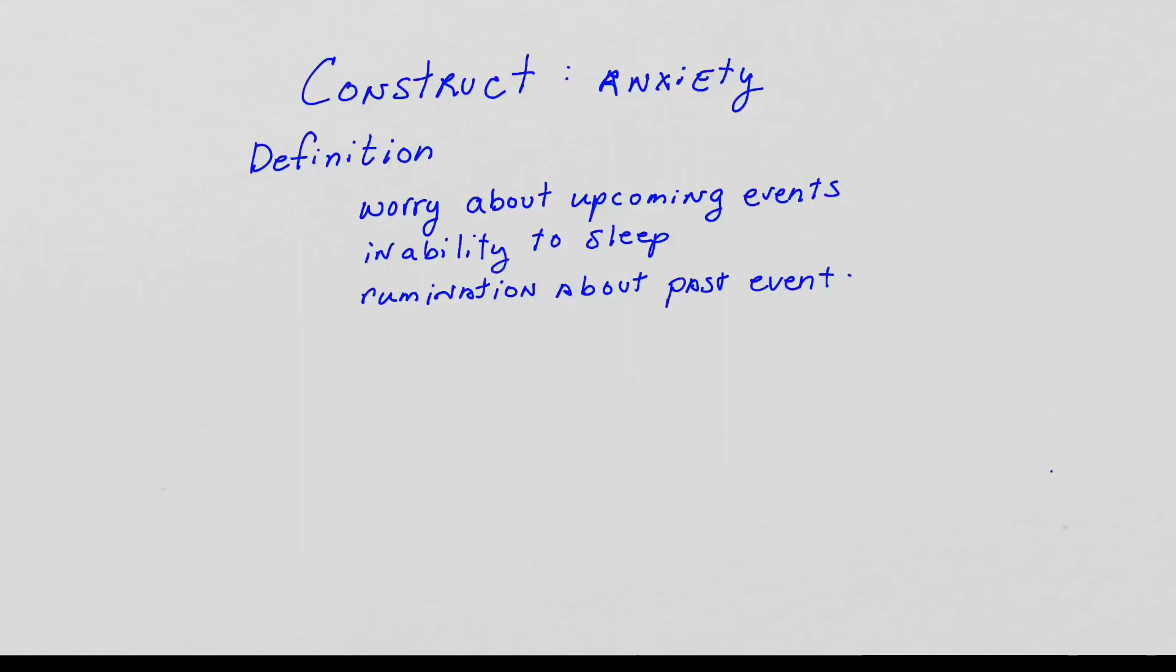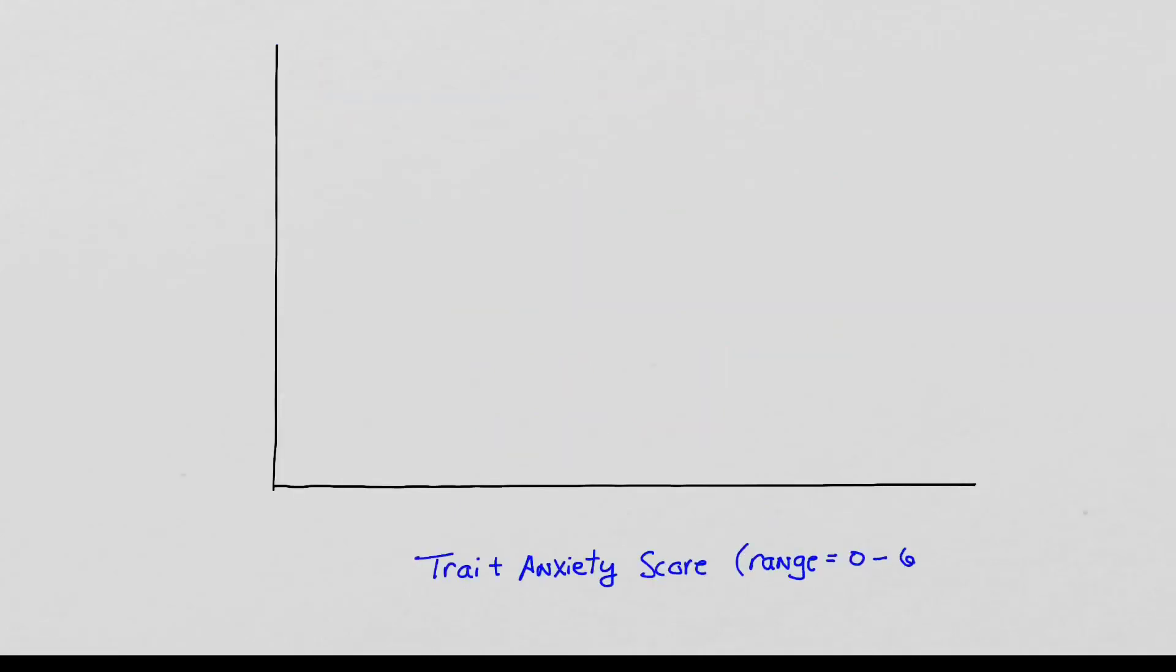Let's do an example. Let's say our construct is anxiety. We can define anxiety as excessive worry about the future and past combined with an inability to focus and difficulty sleeping. We could measure it a lot of different ways. For this example, let's use self-report scores on an anxiety scale. This is our operational definition.